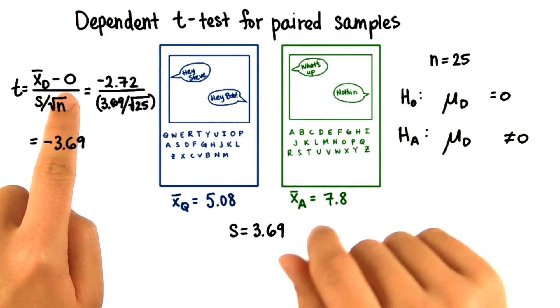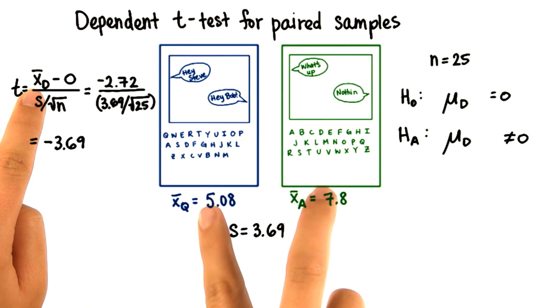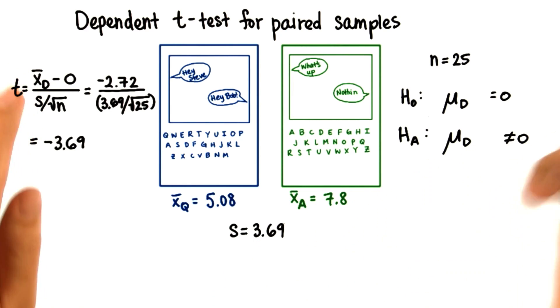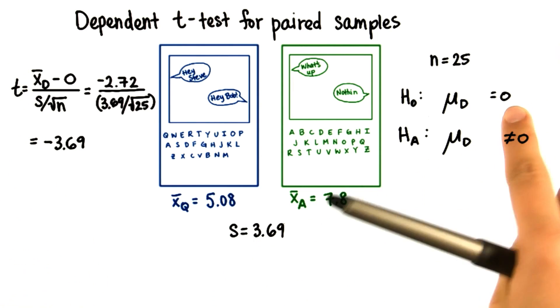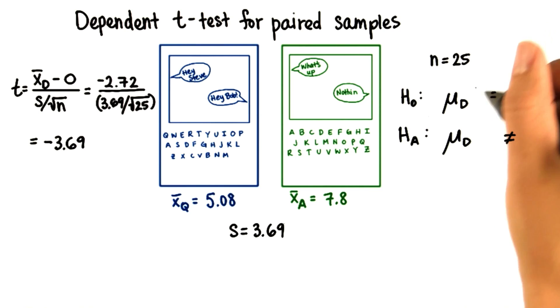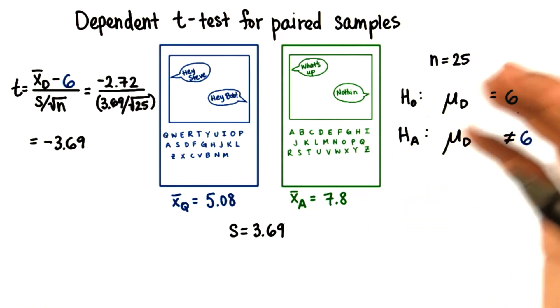However, we could see if this difference between the sample means is significantly different from any value, not just 0. Maybe we want to test if the difference between sample means is 6. Usually, though, we're looking to see if the difference is different from 0.